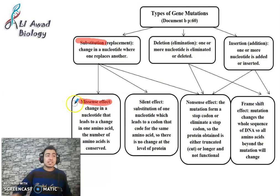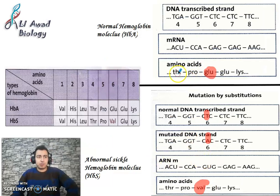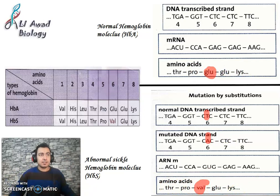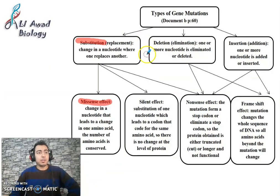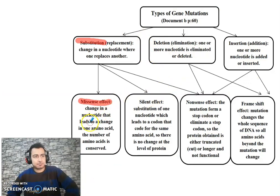In the missense effect, the number of amino acids is conserved — if there were five amino acids before, there are still five after. Only the type of amino acid is replaced, not the number. This is called the missense effect.